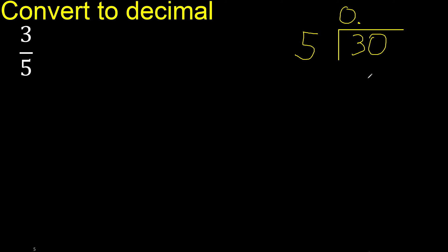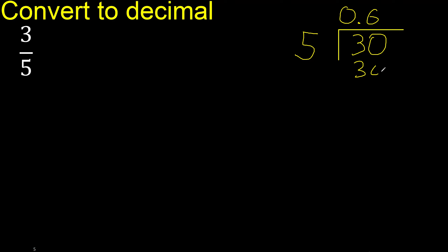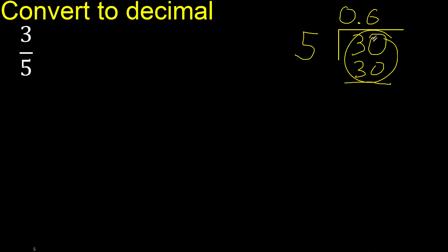35 is greater than 30, therefore try another number. 5 multiplied by 6 is 30. 30 is not greater than 30, therefore ok, subtract. 30 minus 30 is 0.